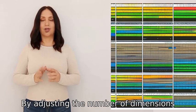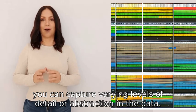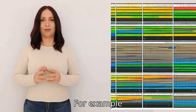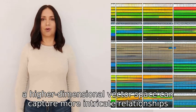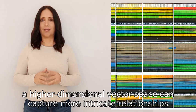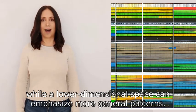By adjusting the number of dimensions, you can capture varying levels of detail or abstraction in the data. For example, a higher dimensional vector space can capture more intricate relationships, while a lower dimensional space can emphasize more general patterns.